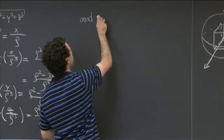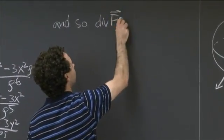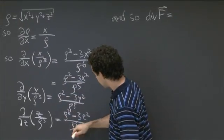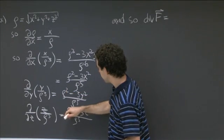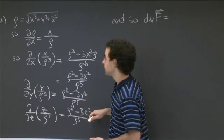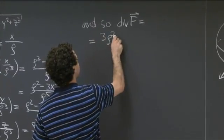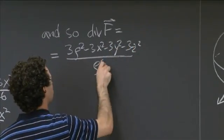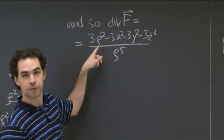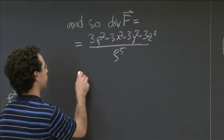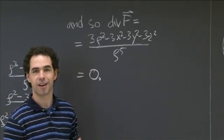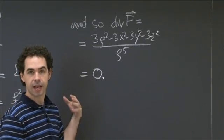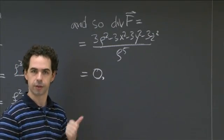Adding these up, we get that div F equals the sum of those three things. The denominators are all rho to the fifth, and we've got 3 rho squared minus 3x squared minus 3y squared minus 3z squared, all over rho to the fifth. But rho squared is x squared plus y squared plus z squared, so this numerator is just 0. So div F equals 0, which is what we thought it should be. So that's part a — we computed the partial derivatives and added them to get the divergence, and found it equals 0.